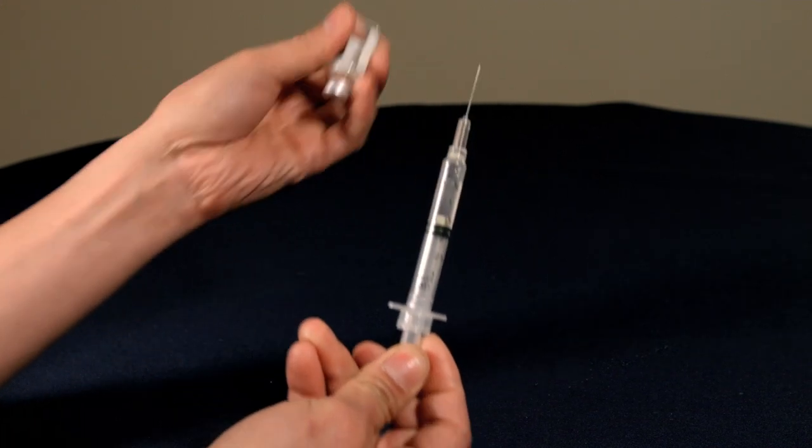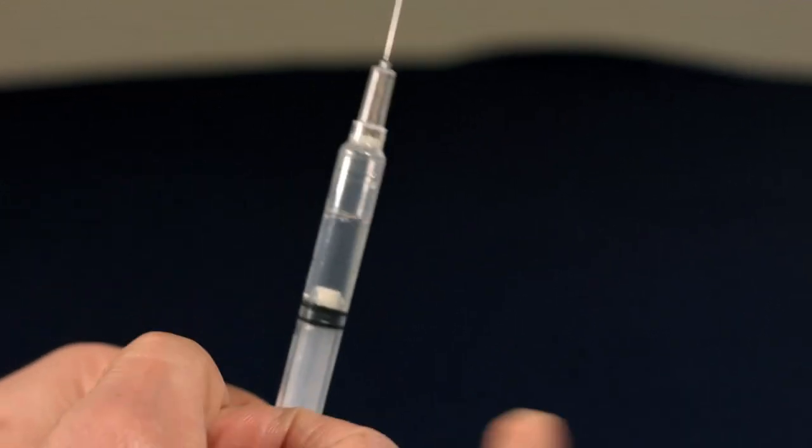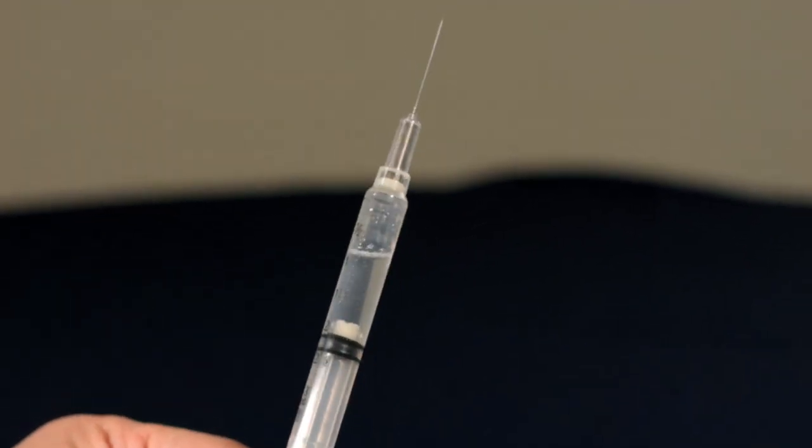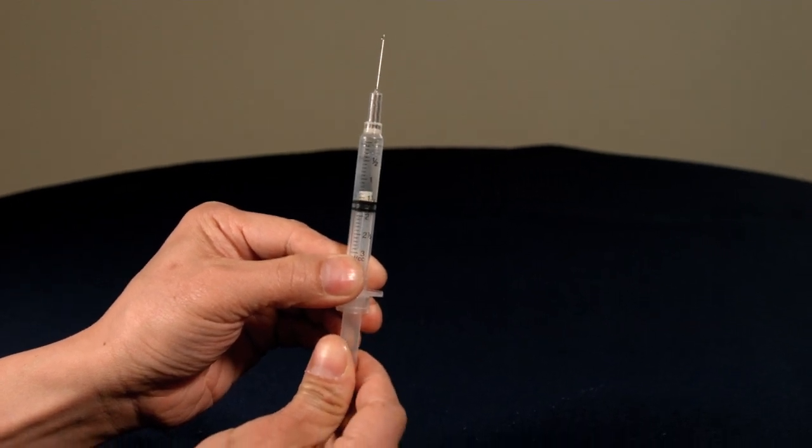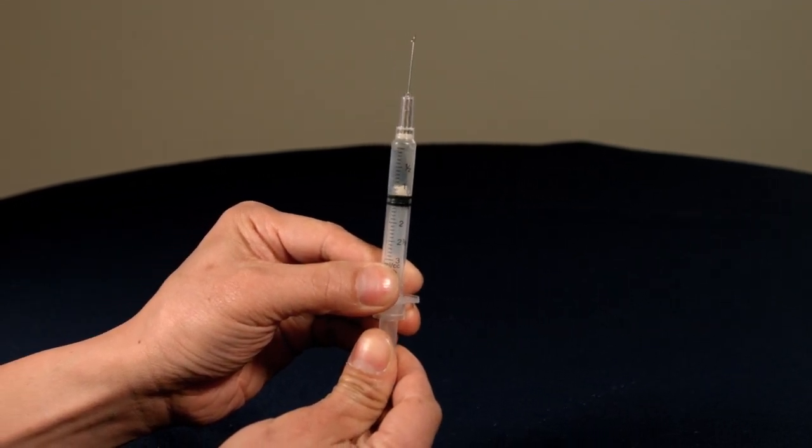Hold up the syringe at eye level and tap the side to loosen any air bubbles. Remove any air by squeezing the plunger until a drop of liquid appears at the tip of the needle.